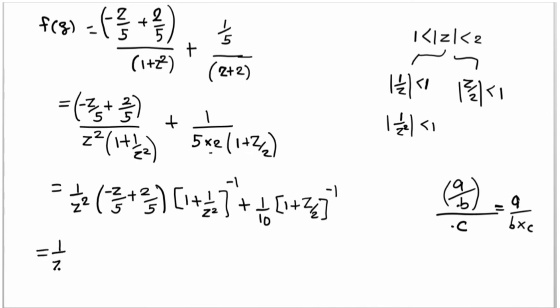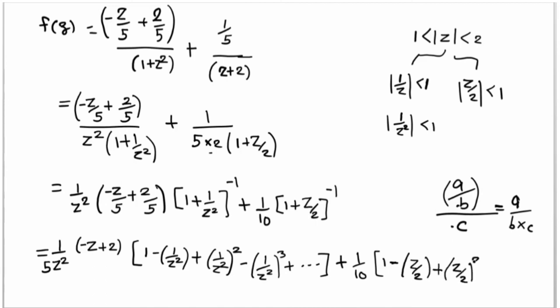Now expand this term. (1/z²)(1/5)(-z+2) times the expansion (1 - 1/z² + 1/z⁴ - 1/z⁶ + ...) plus (1/10) times the expansion (1 - z/2 + z²/4 - z³/8 + ...).